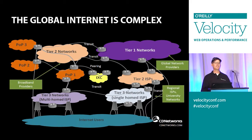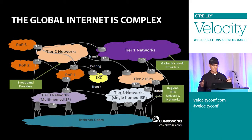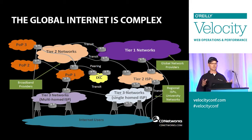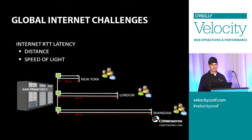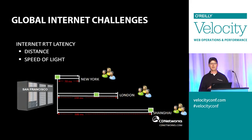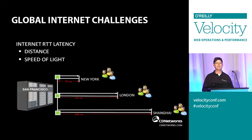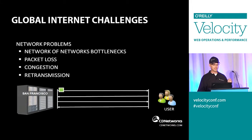The Internet is a network of networks. It's global ISPs connected to regional ISPs, and content is traversing generally multiple ISPs to get from source to destination. Because of this and the long distance, you've got a couple of issues that affect performance, especially global performance. The first being distance — the further you are away from content, the longer it takes to get there. You're constrained by the speed of light, and also routers and all the hops along the way slow things down.